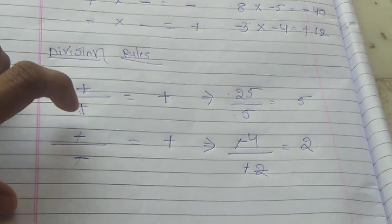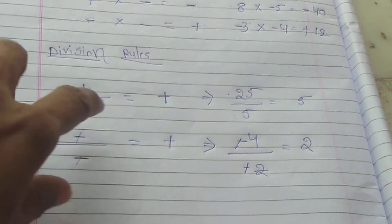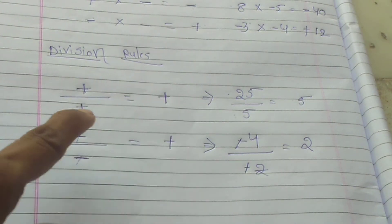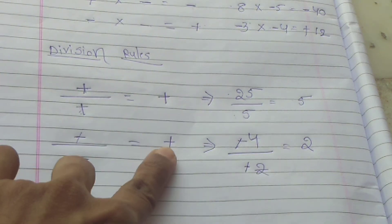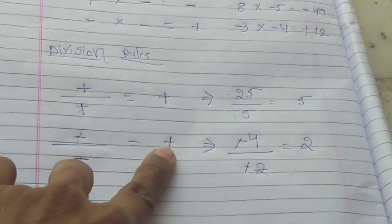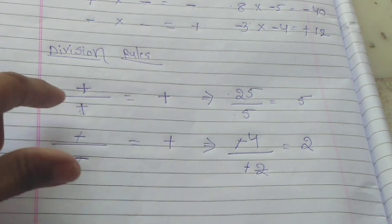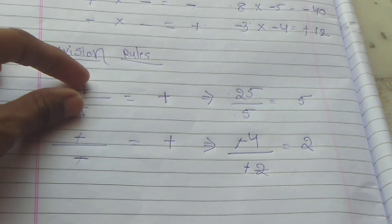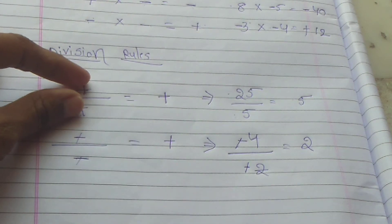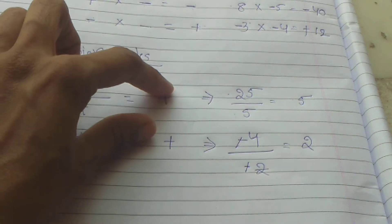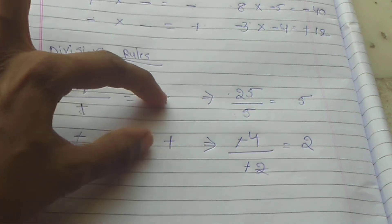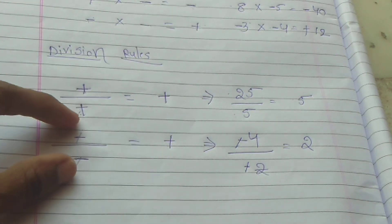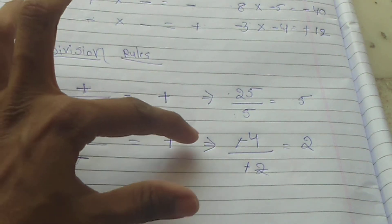So, plus divided by plus gives plus, and minus divided by minus gives plus. This is the same as the multiplication rule: when both symbols are the same — both plus or both negative — the answer is plus.